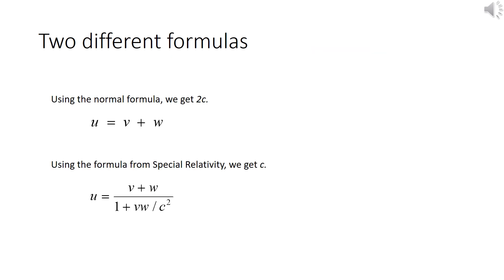Using the normal formula u = v + w, we get 2c. Using special relativity's formula, on the other hand, u = (v + w)/(1 + vw/c²), we get c.